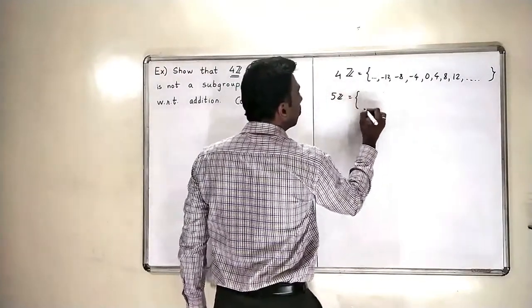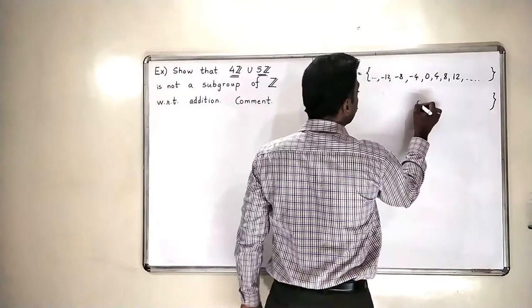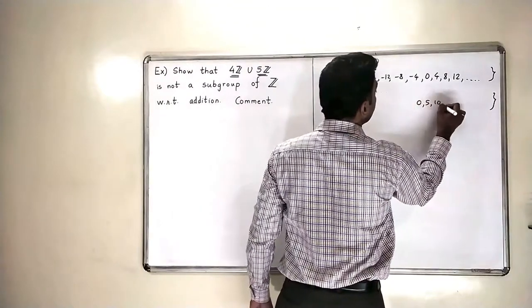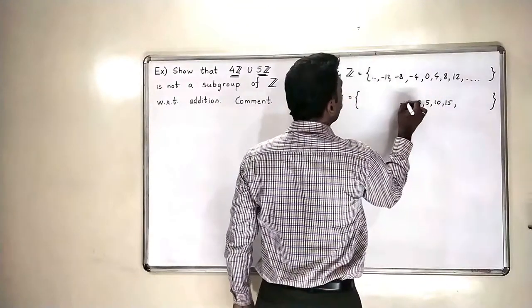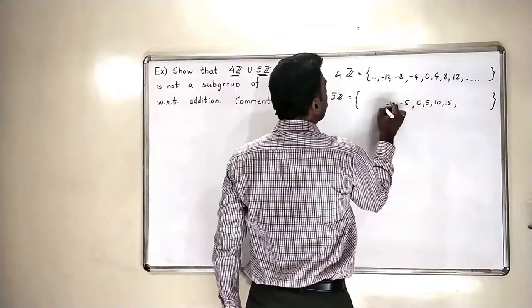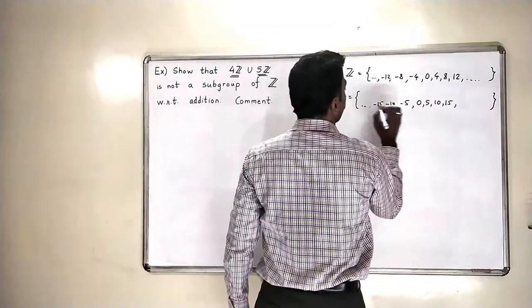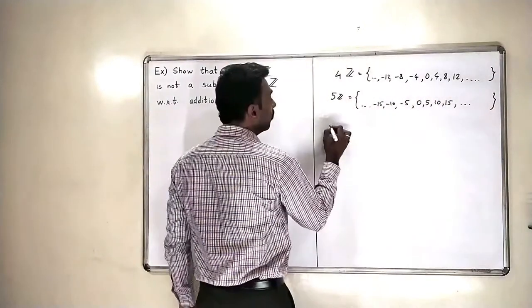What is 5Z? It will contain all multiples of 5. So it will be 0, 5, 10, 15 and so on. Minus 5, minus 10 and minus 15 and so on.